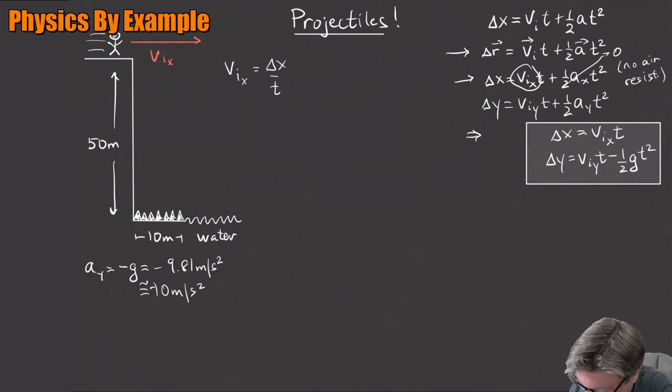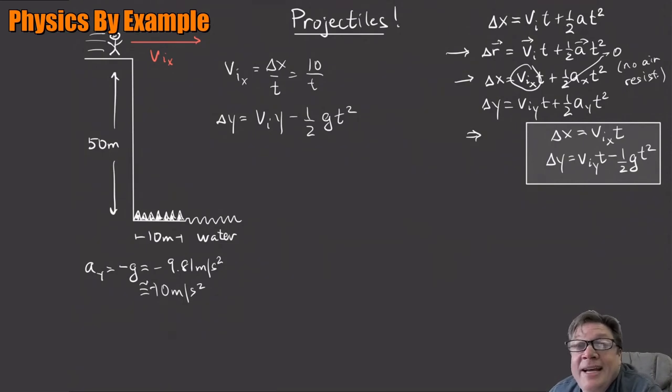What we're going to do is v initial x is just going to equal delta x over t. Delta x I know - I need to go 10 meters. But the t, I don't know how long I've got to clear that ground. The question is, how long does it take to fall? Almost always, that's our strategy in projectile problems: we want to know how long it takes to fall.